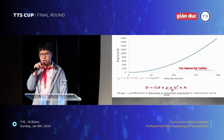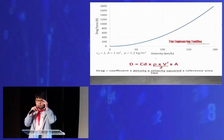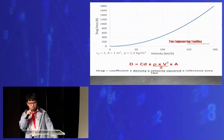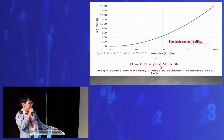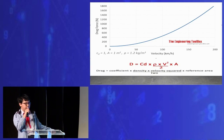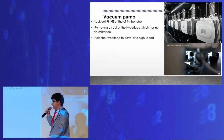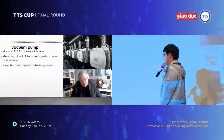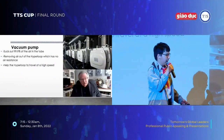As we all know, an object traveling in a fluid such as air or liquid is acted upon by drag force. The vacuum pump can suck out 99.9% of the air in the hyperloop, so there would be no air, no air resistance, and no drag force to stop the hyperloop.